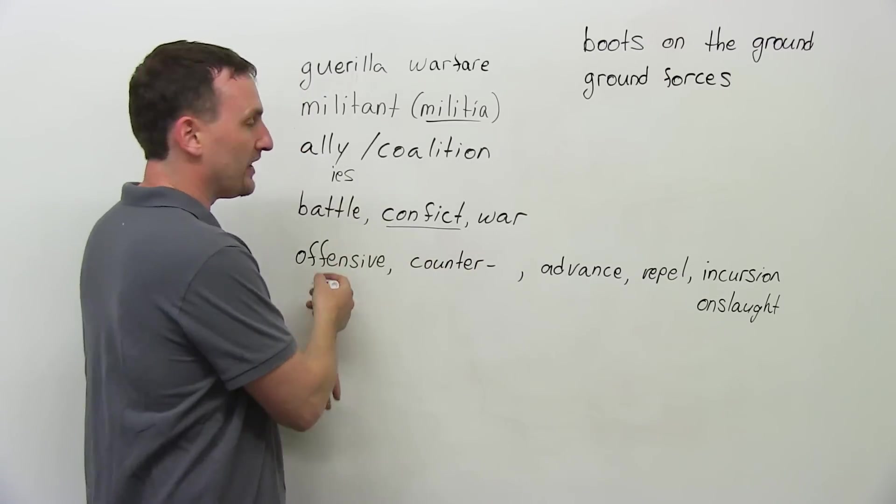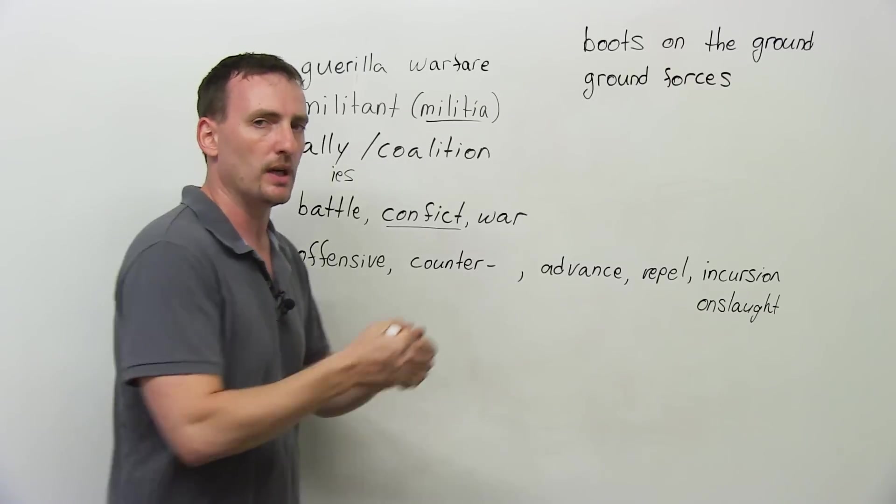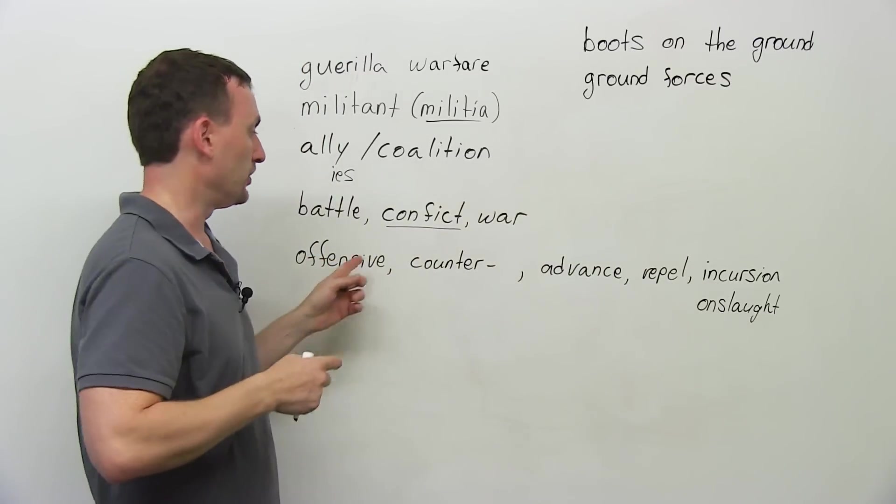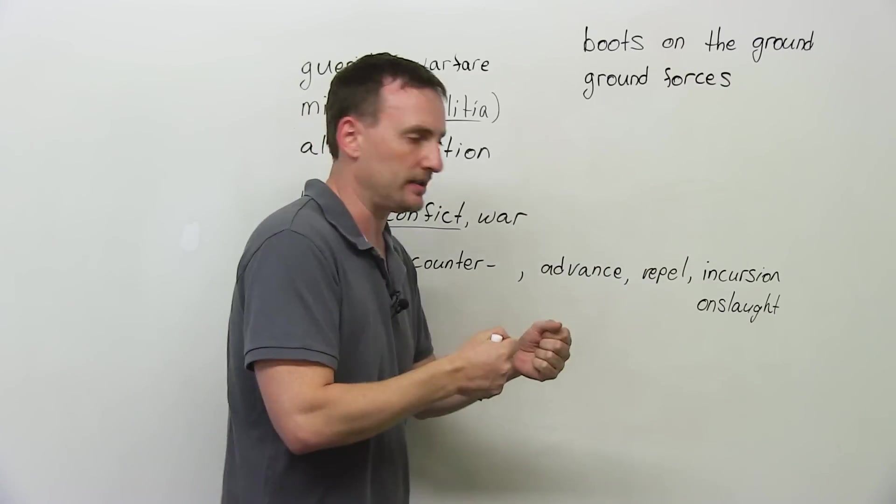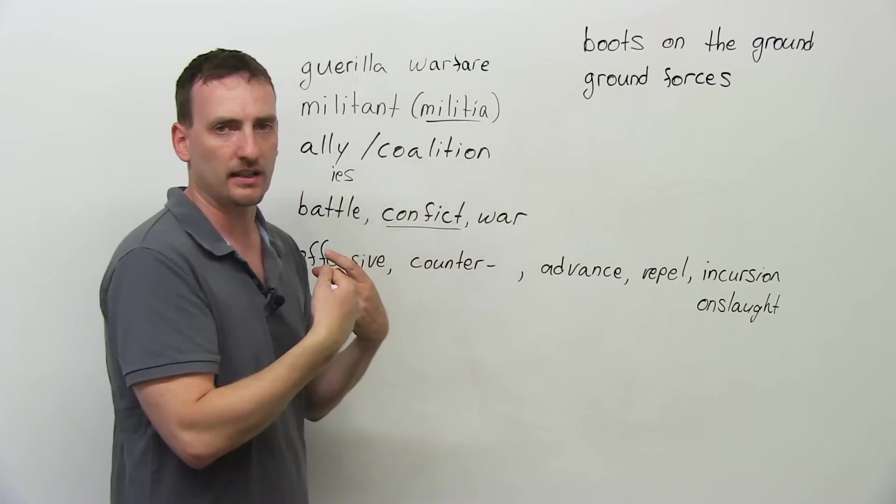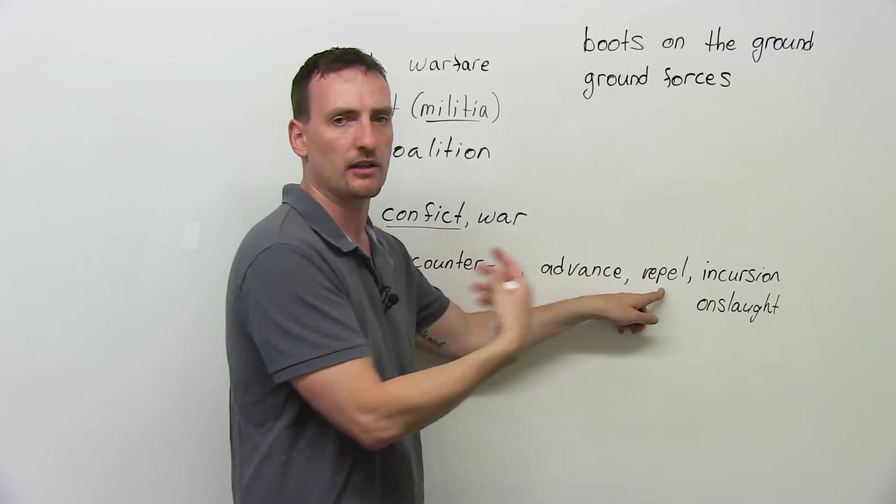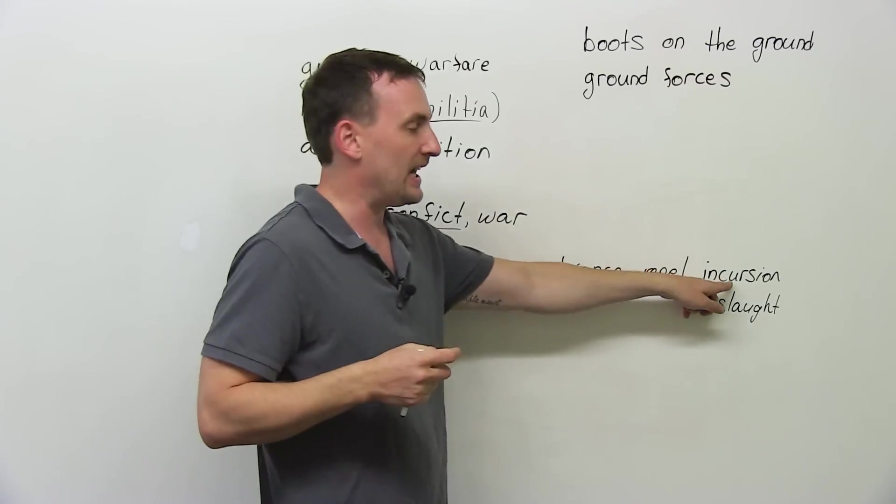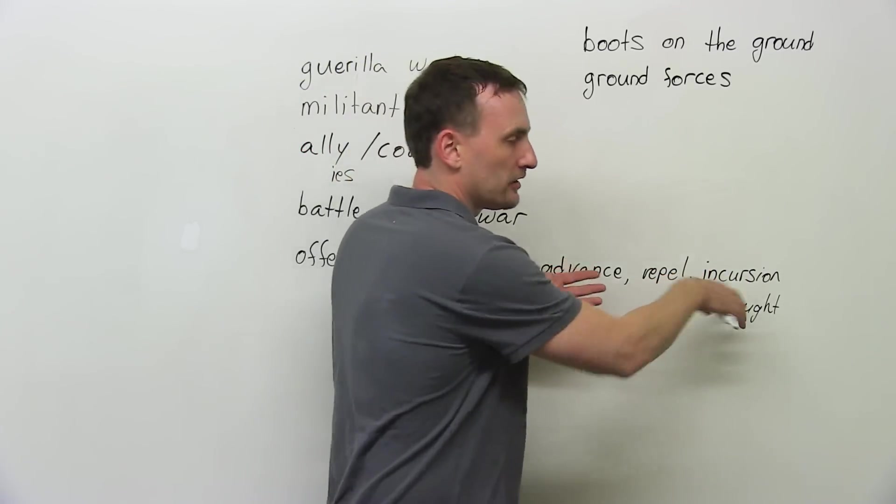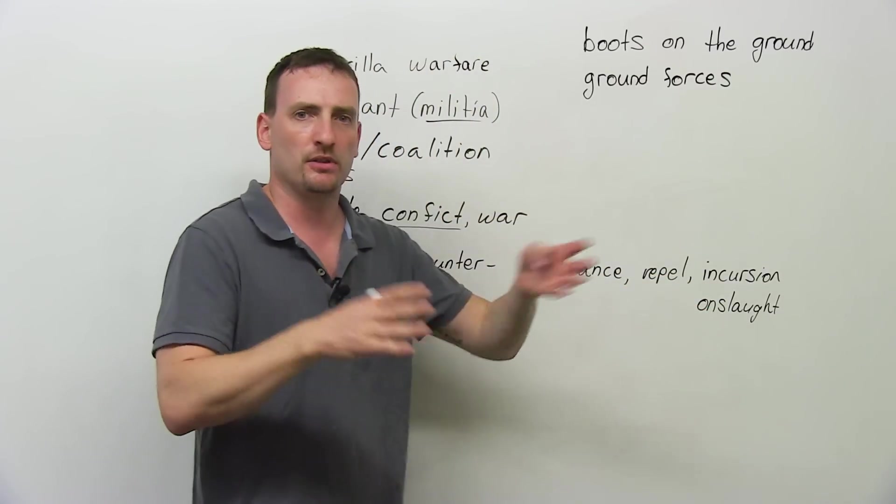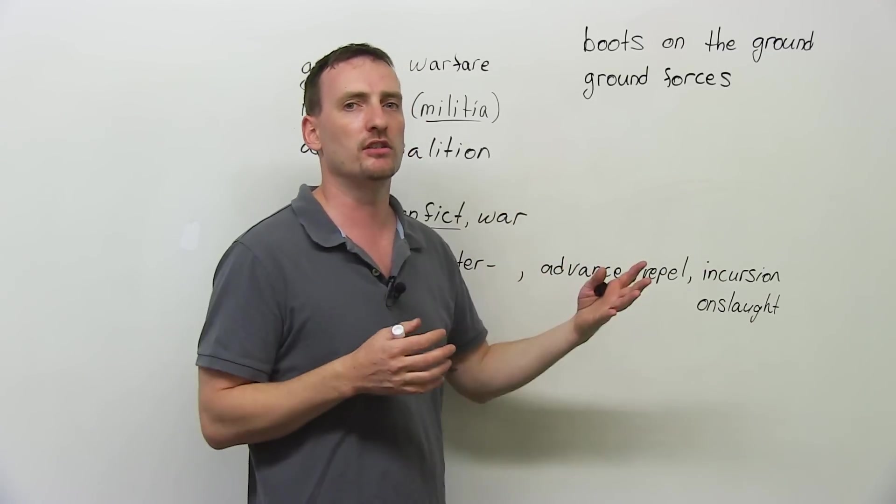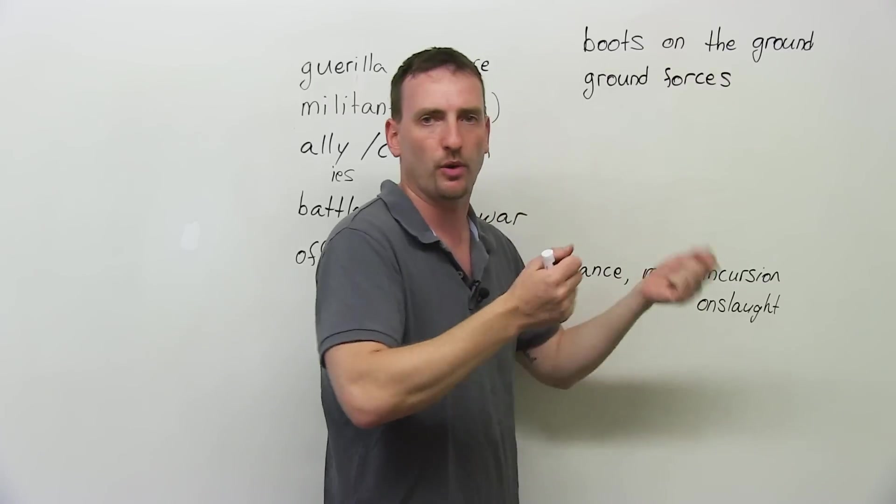Now, when you talk about war, again, you have an offensive. An offensive is when you attack. A counteroffensive is when the other side attacks back. So you start an offensive, you start to attack, you're trying to advance on your enemy's territory. They are counterattacking, trying to repel you, to push you back. Now, if you have an incursion, it means you've entered the enemy's territory, you were able to get inside. Incursion means get inside. Now, if you go in and you're able to destroy a lot and kill a lot of people, then we call this situation an onslaught. You're advancing and killing and destroying as you go.